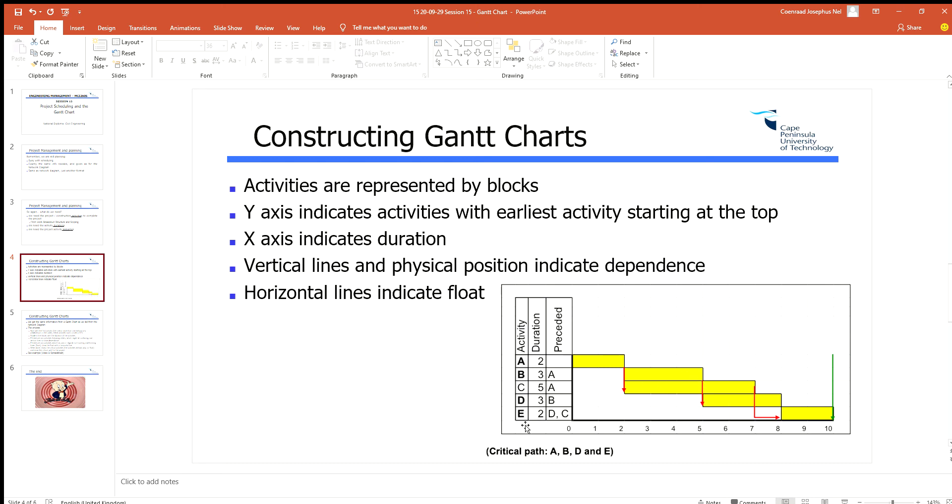Activity E needs D and C. There's C, there's D. You finish them, you start activity once all the activities are finished. You can't start E on seven because then activity D is not finished yet. So you wait for both the predecessors to be finished and then you can put it in there.